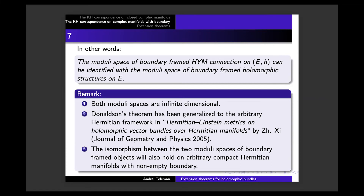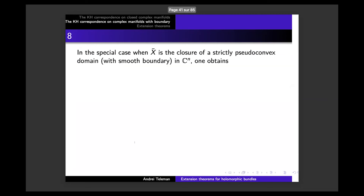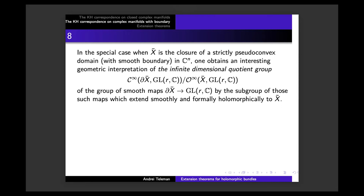Now comes the point: in the special case of a strictly pseudo-convex domain in Cⁿ — for a complex analyst, a compact complex manifold with boundary first brings to mind a strictly pseudo-convex domain in Cⁿ, for instance a ball — one obtains an interesting geometric interpretation of an infinite-dimensional quotient group, also considered by Donaldson.